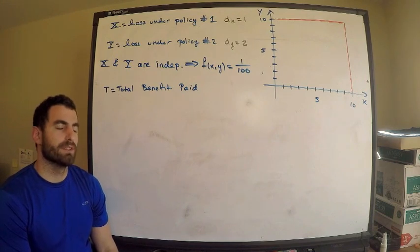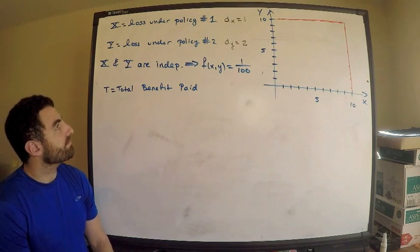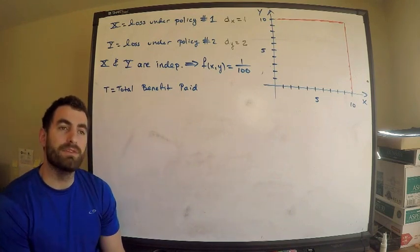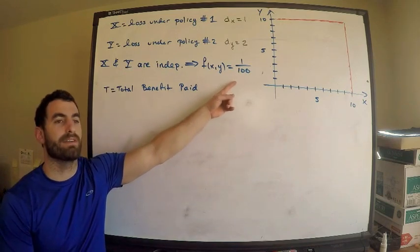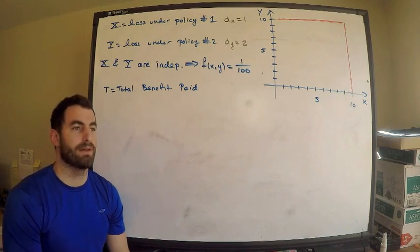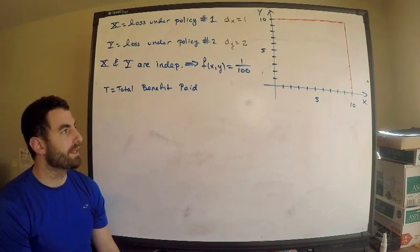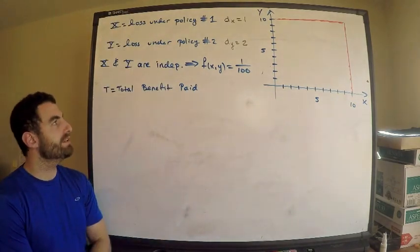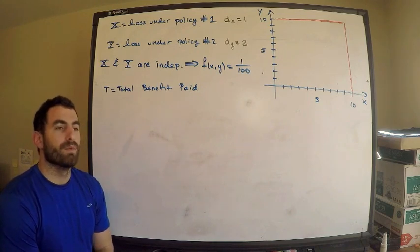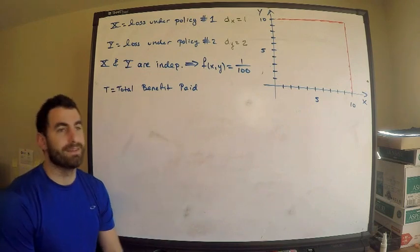X and Y are independent, which means we can write the joint PDF as the product of the two marginal PDFs. X and Y are each distributed uniform over the interval zero to ten. So I multiply one-tenth by one-tenth to get one over a hundred — that's the joint PDF. We're interested in the probability that the total benefit paid is less than five.